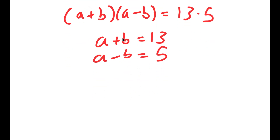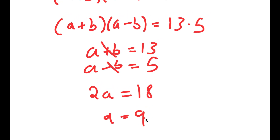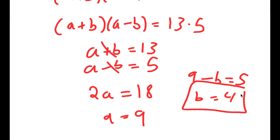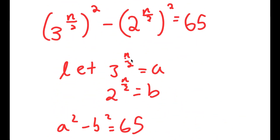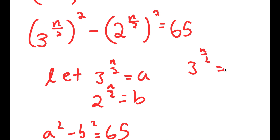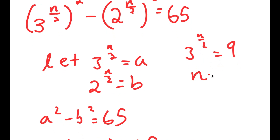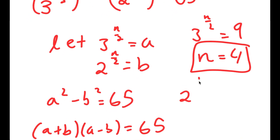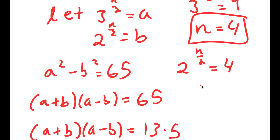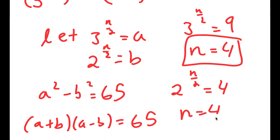So now I have a system of equations. I'm going to add them together: 2a is equal to 13 plus 5, which is 18, meaning a equals 9. And if a equals 9, I plug back in to get 9 minus b equals 5, meaning b equals 4. So a equals 9 and b equals 4. Remember we let a equal 3 to the power of n over 2, so 3 to the power of n over 2 equals 9, meaning n equals 4. And 2 to the power of n over 2 equals 4, also meaning n equals 4. So n equals 4 is the solution.